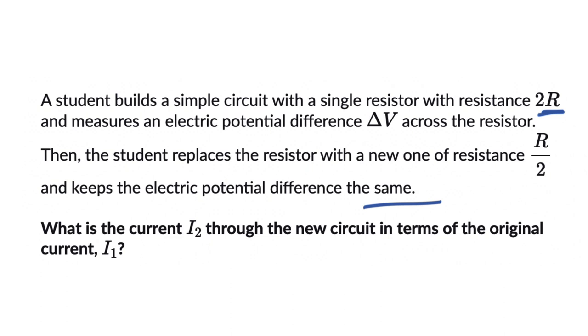Let's apply Ohm's law here. We know Ohm's law is V = IR. For the first case, we can use a subscript 1, so we can write that as ΔV. We know what that is - the measured electric potential difference.